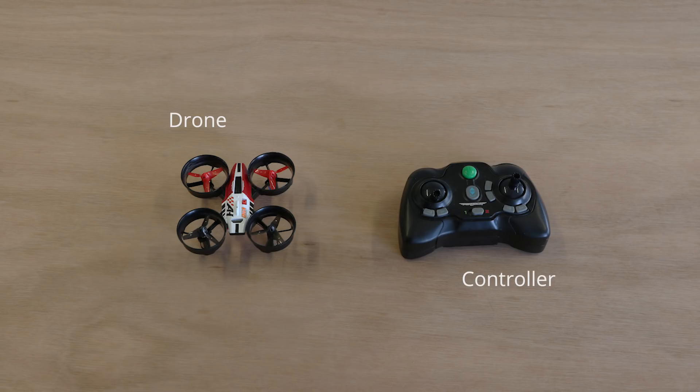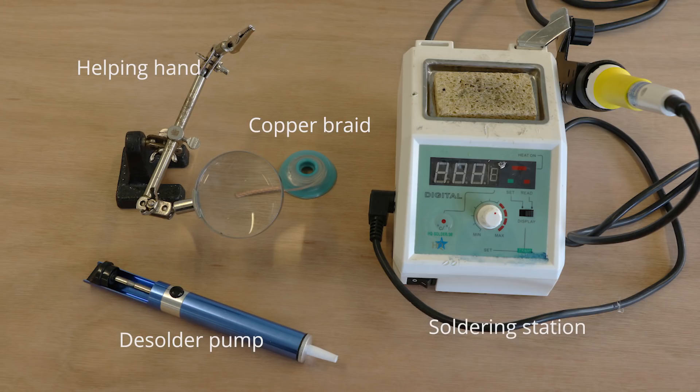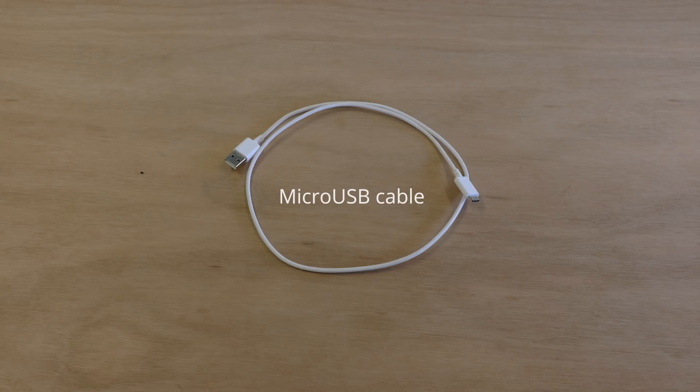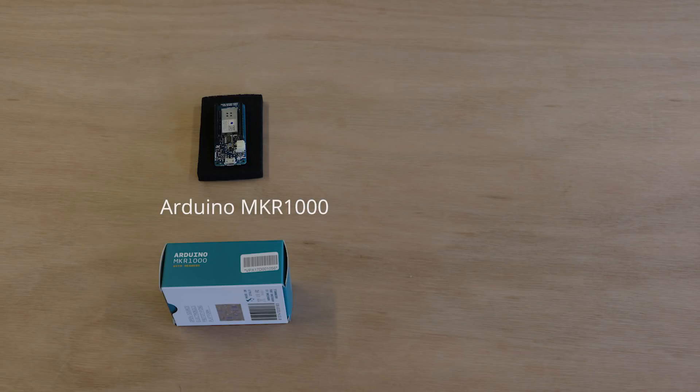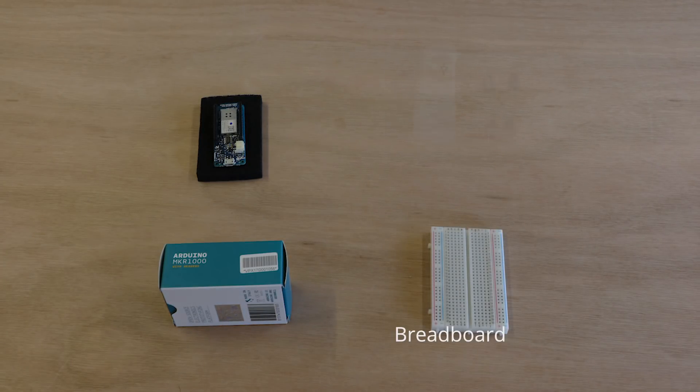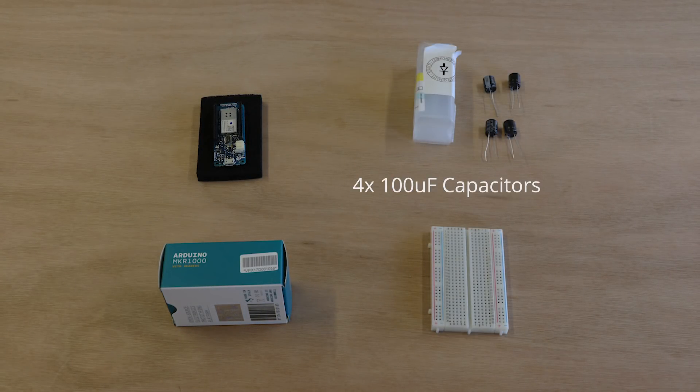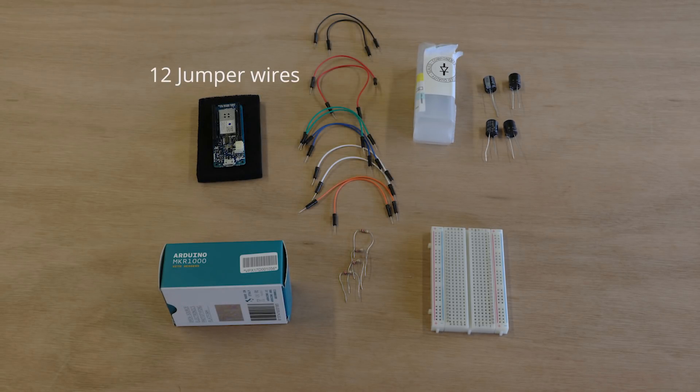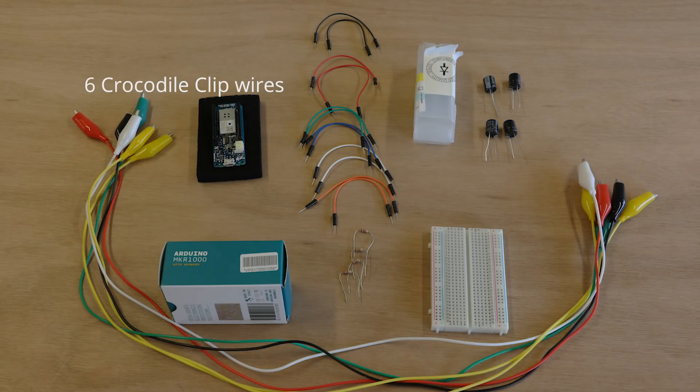For this project we need a drone and its controller, a soldering station and its accessories, a multimeter, the NeuroSky Mindwave Mobile, a micro USB cable, the Arduino Maker 1000, one breadboard, four 100 µF capacitors, four 220 ohm resistors, 12 jumper wires and six crocodile clip wires.